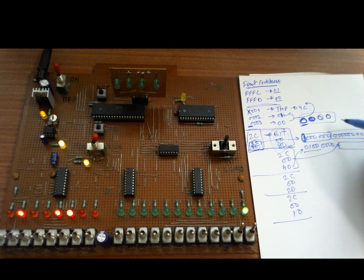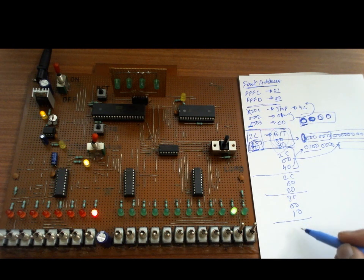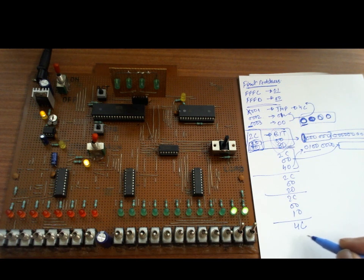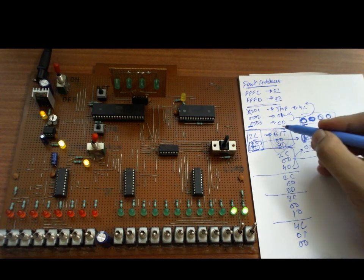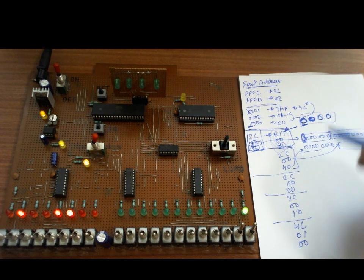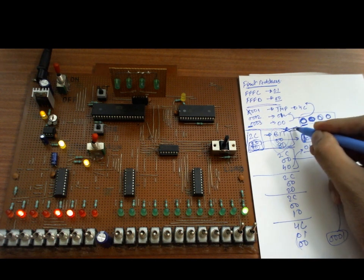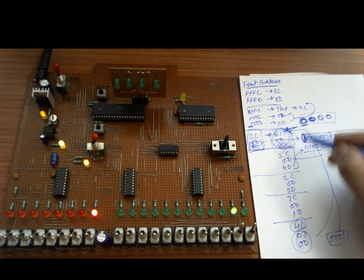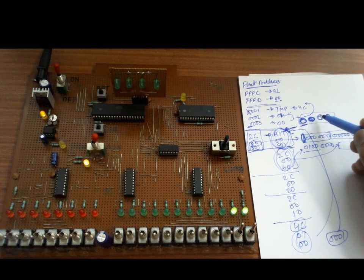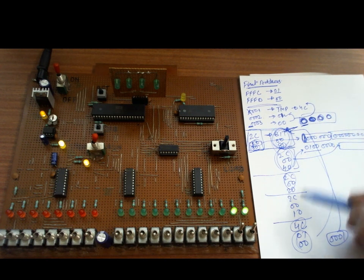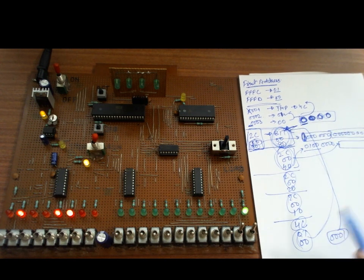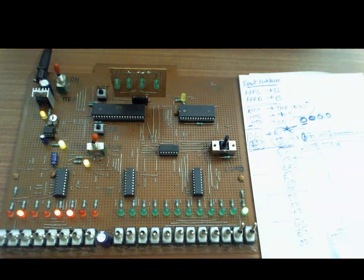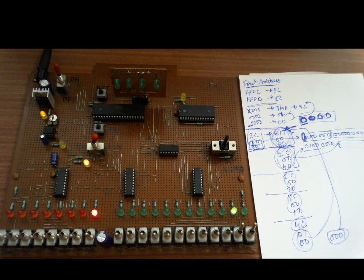Then we say jump — that is 4C — and the jump address is 0x0100, because this code was fed starting at address 0x01. So the JMP instruction points back to the start of the chaser code at 0x01. These three lines of code say: glow this LED, glow this LED, glow this LED, glow this LED, and jump again. What will happen is that one by one the LEDs will start glowing in sequence.